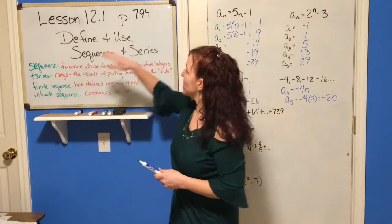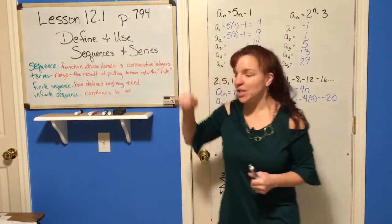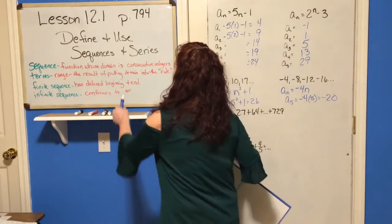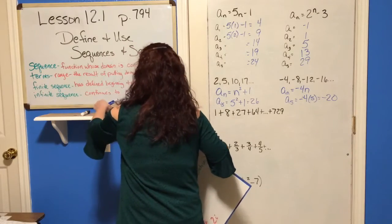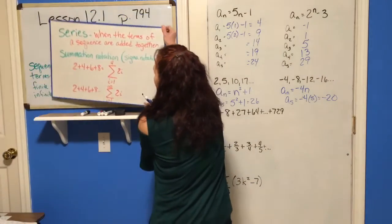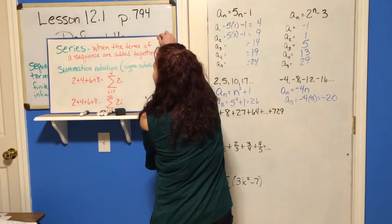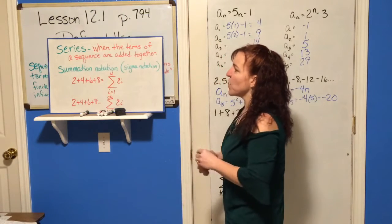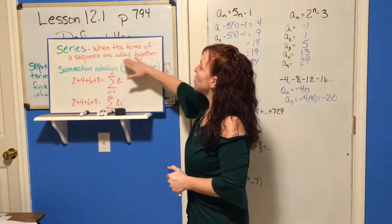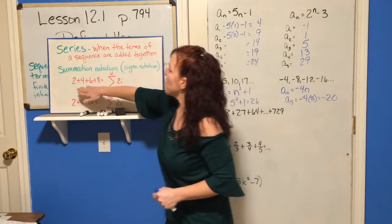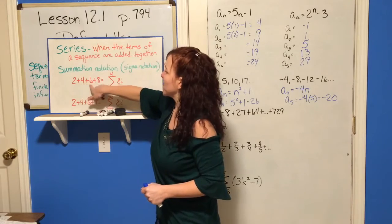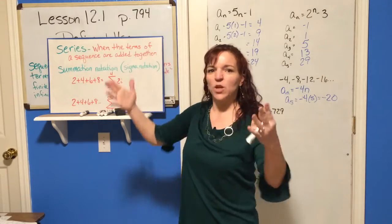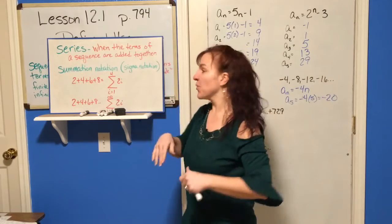Also in this section, we're going to define sequences and series. A series is when the terms of a sequence are added together. For example, 2+4+6+8 is a series. The sequence is just the list; the series is when you add those terms together.